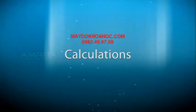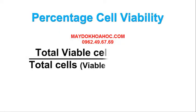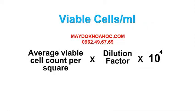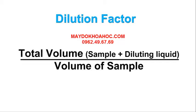Now the calculations. The percentage of cell viability can be calculated using the formula: total viable cells (unstained) divided by total cells (viable and dead) into 100. Viable cells per milliliter is the average viable cell count per square into dilution factor. Dilution factor is equal to total volume — that is the volume of sample plus the volume of diluting liquid — divided by volume of sample.